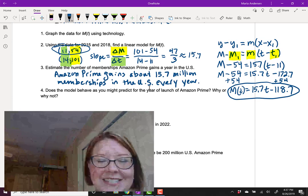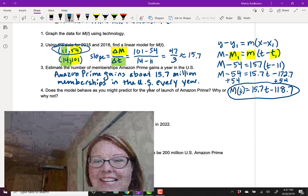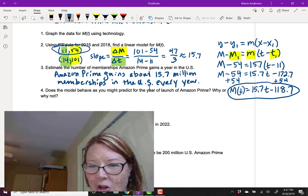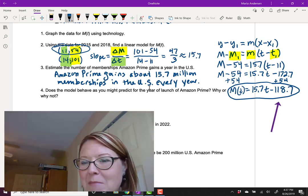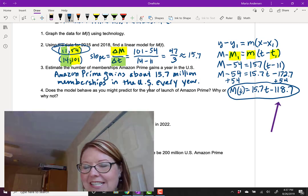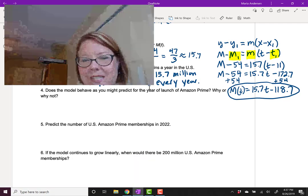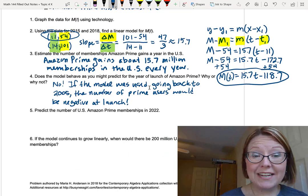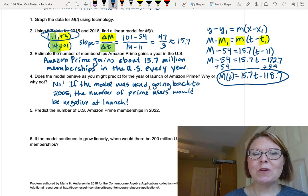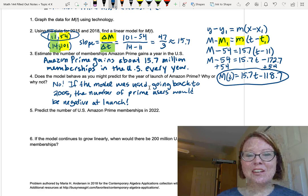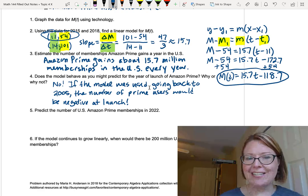Now as we've already discussed, this model does not behave as you might predict for the year of launch of Amazon Prime. If this model held going backwards, you would have a negative number of memberships in time equals zero. So I'm just going to write, no, if the model was used going back to 2005, the number of Prime users would be negative at launch.